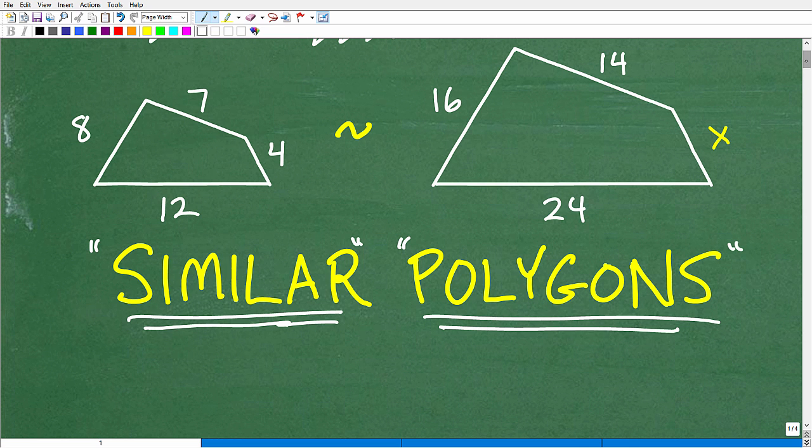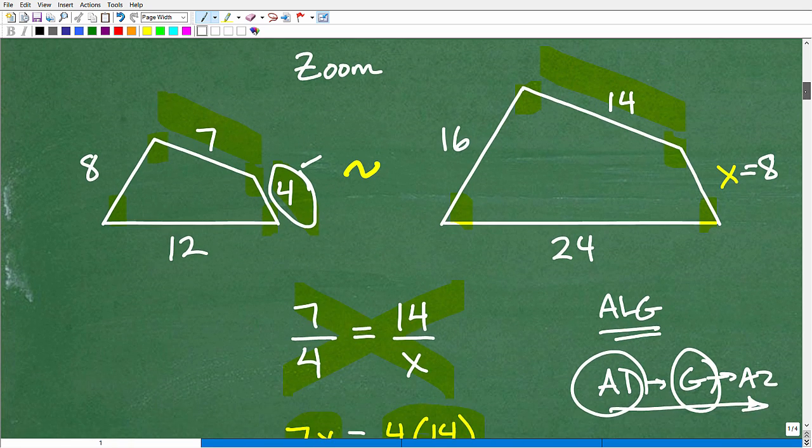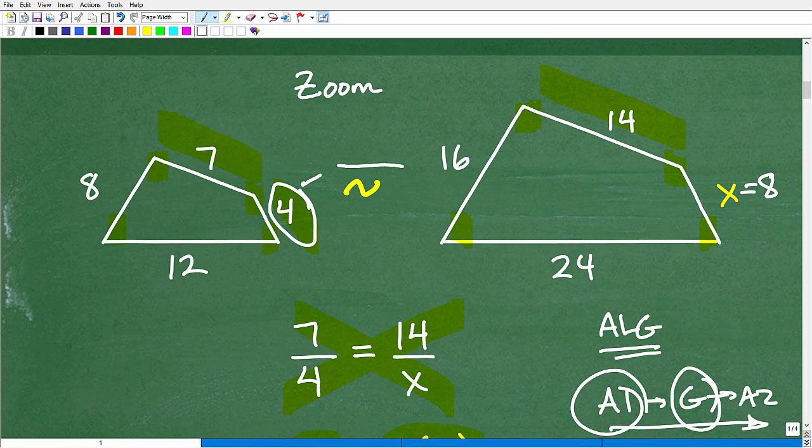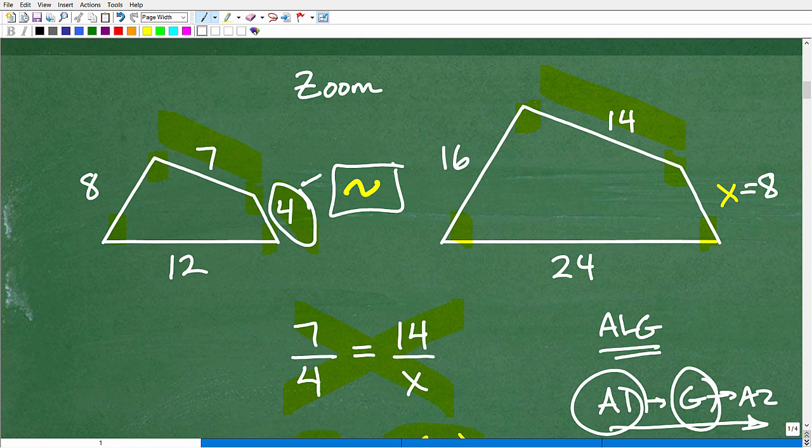That was pretty quick. So, anytime you have similar figures - you can have similar polygons, quadrilaterals, triangles, doesn't make a difference - the secret or the key to solving similar figure problems is setting up proportions.